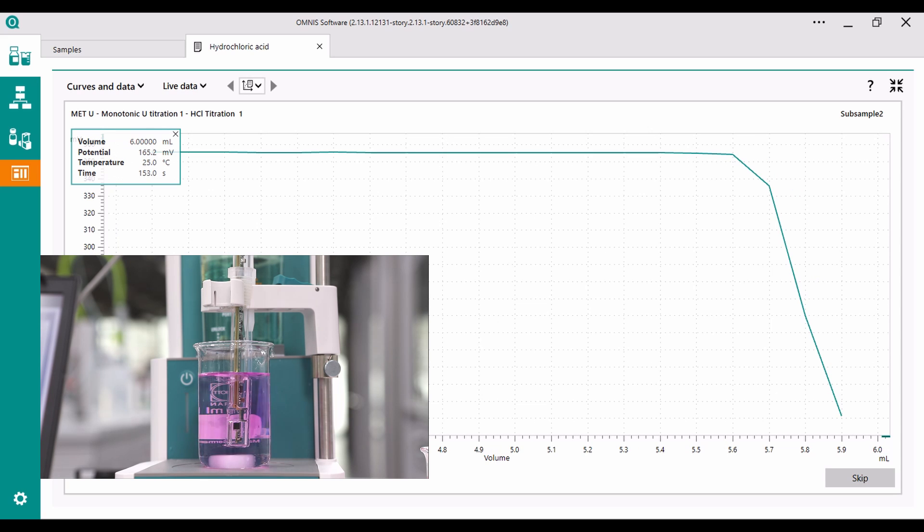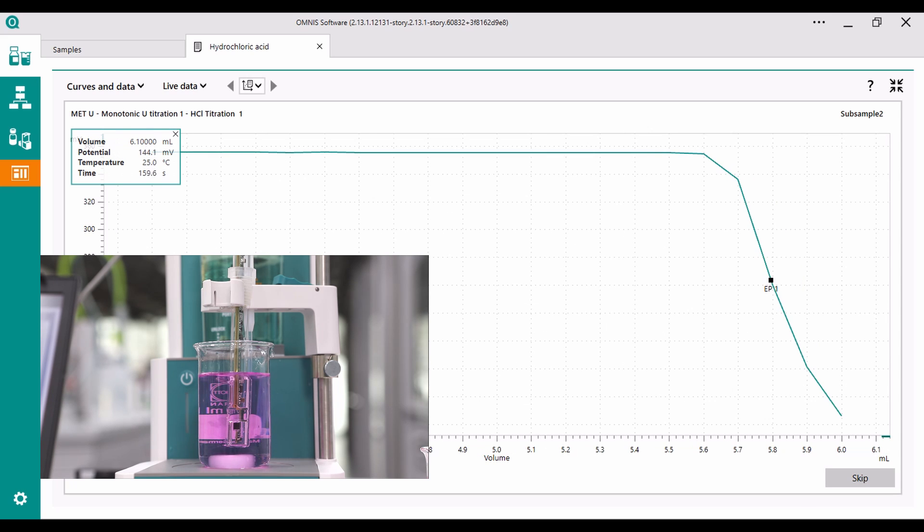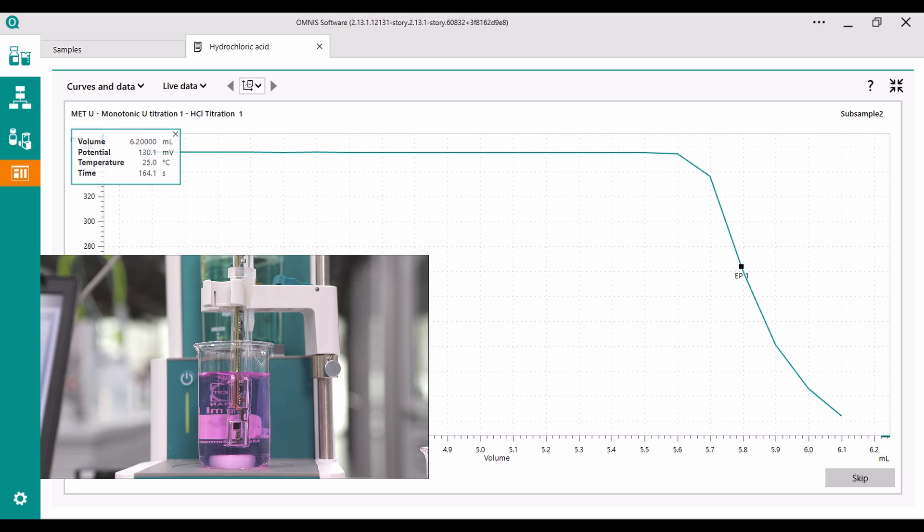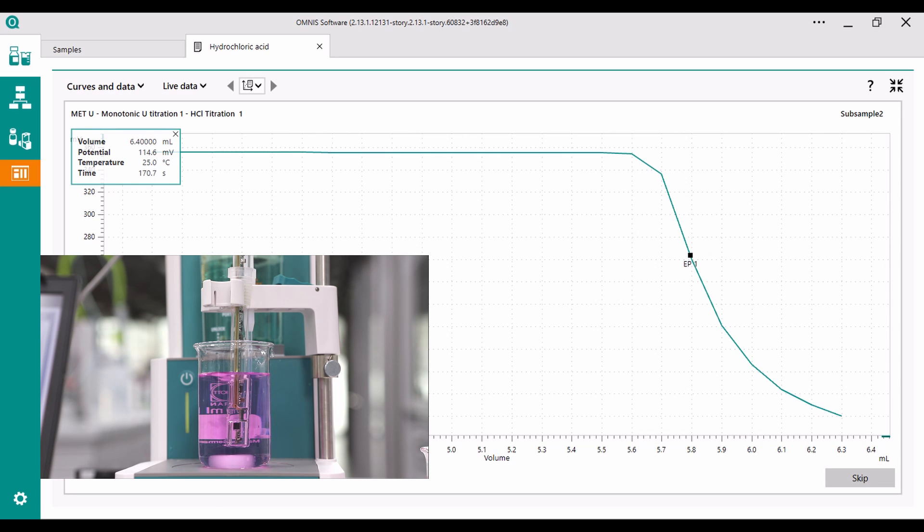This is the reason why you don't need to change your titration method. The color change of the indicator is detected reliably as a change in potential.